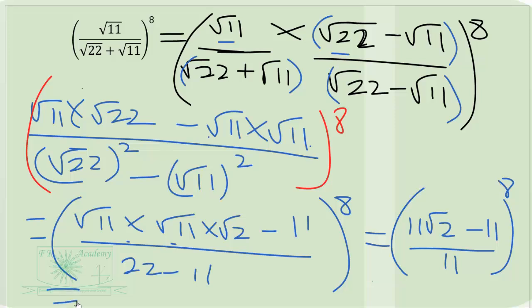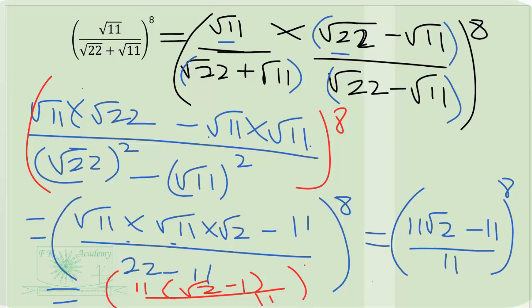So the 11 in the numerator will cancel with the 11 in the denominator. We are left with square root of 2 minus 1, all over 11 exponent 7, which gives us the expression (square root of 2 minus 1) to the exponent 8.